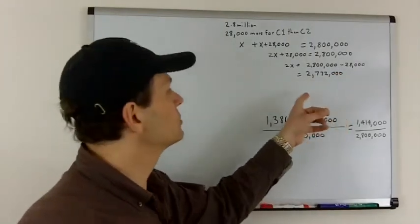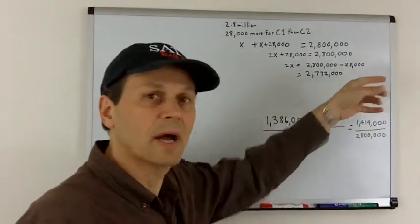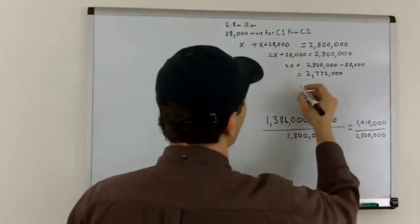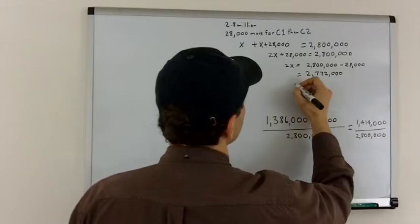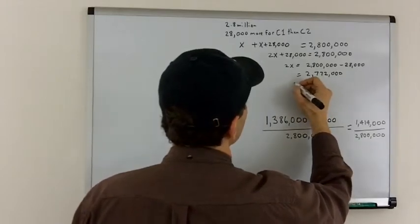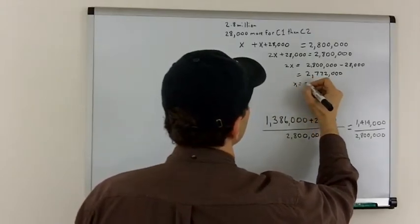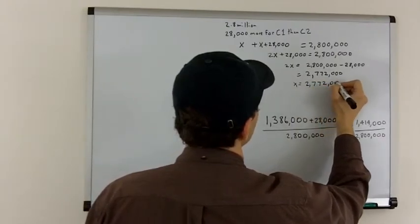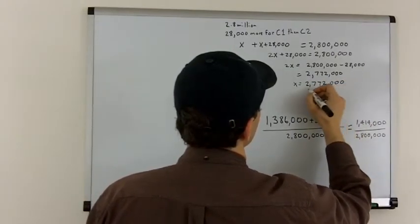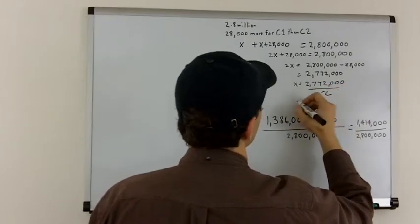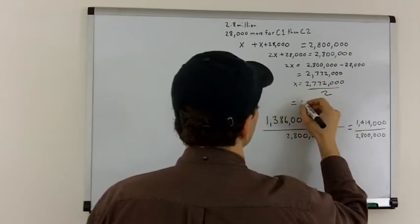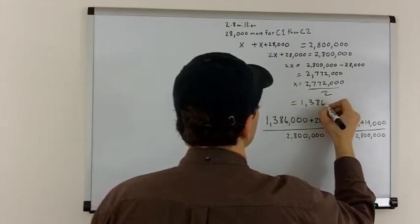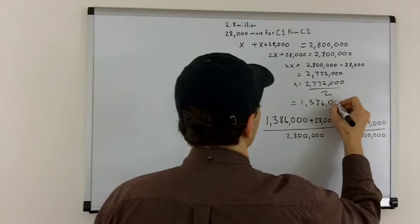Incidentally, I didn't do that in my head. I calculated that number in advance. So, X is going to be equal to 2,772,000 divided by 2, which is equal to 1,386,000.